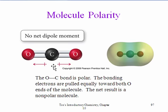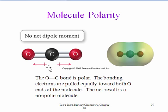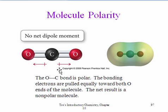Here we have a molecule, carbon dioxide, that contains polar bonds. Oxygen is one of the most electronegative atoms on the periodic table, and carbon is not that electronegative. If we look at the directionality of our separation of charge in our carbon-oxygen bond, it's going to be directed to the oxygen from the carbon. And because these atoms are identical, their pull on carbon is going to be identical.